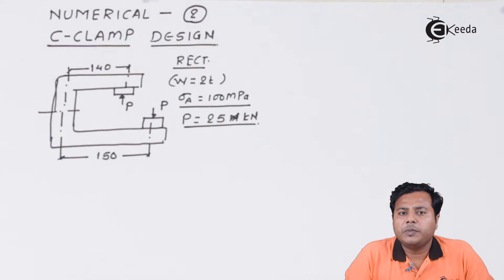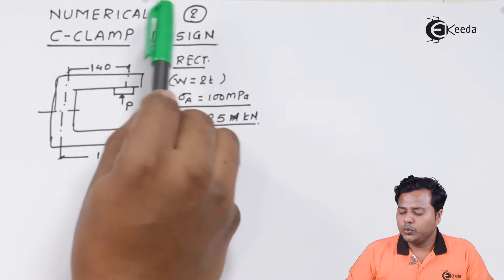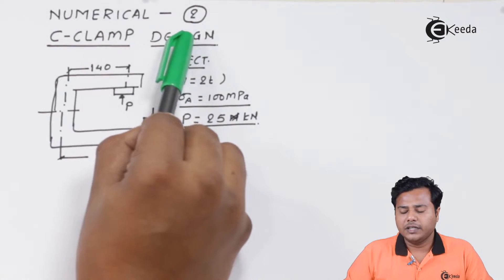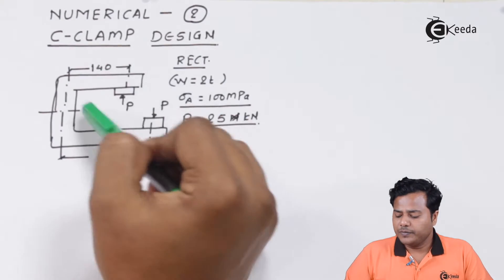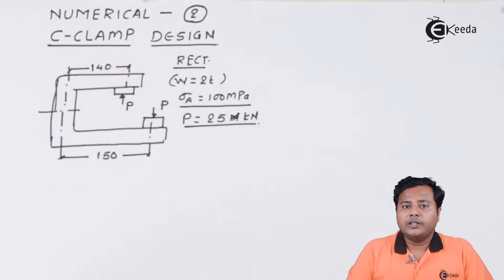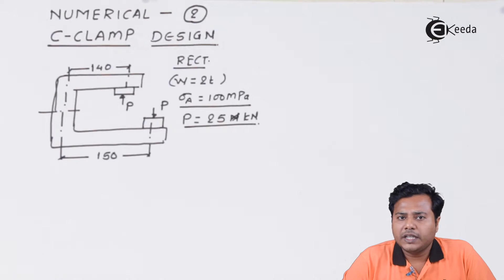The next problem is based on the design of C-clamp. It's numerical number 2, C-clamp design. We have been given such a problem. We are going to solve the problem. In this, as you see the problem statement on the screen, we are supposed to find out the dimensions of the C-clamp.